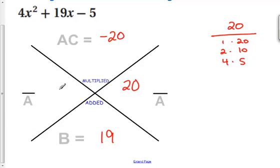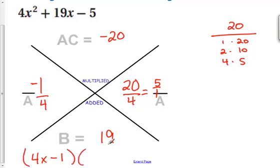So 20 and 1. And in this case, since 20 is positive, that means that this has got to be a negative 1. And then we're going to follow our same steps. 4 and 4. So this is going to simplify as 5 over 1. This is going to stay the same. So we get 4x minus 1 times 1x plus 5.